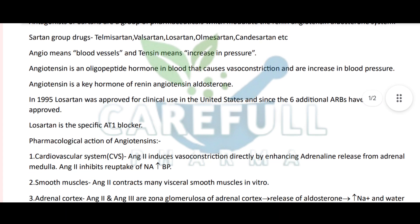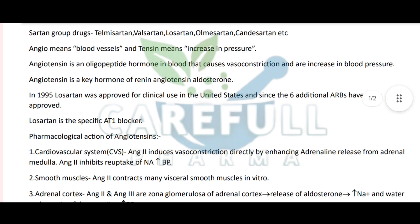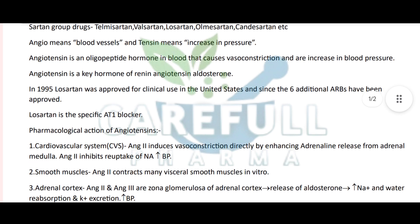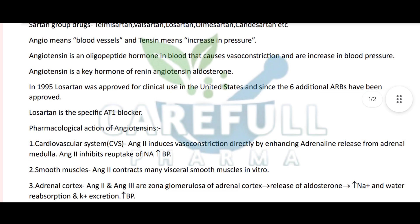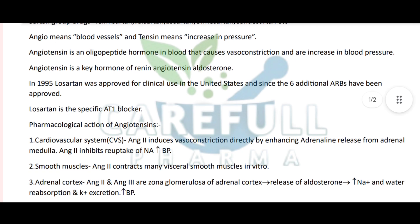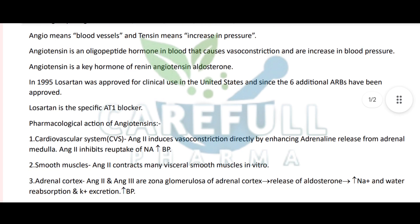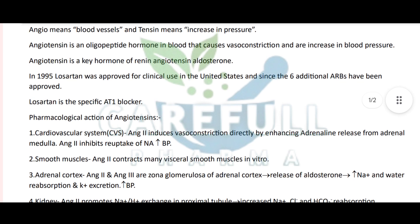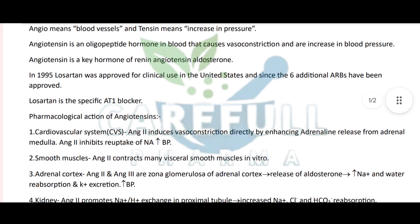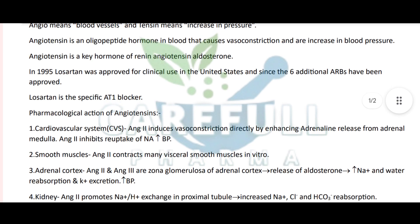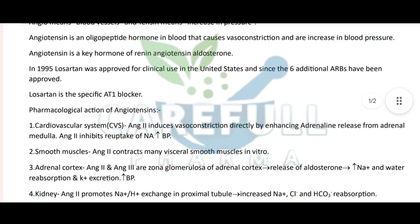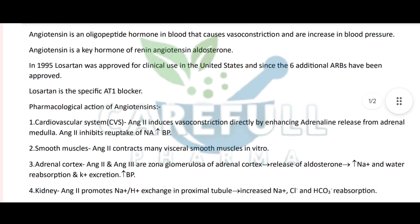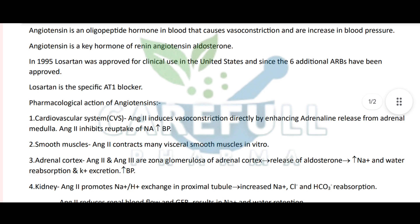Angio means blood vessels and tensin means increase in pressure. Angiotensin is an oligopeptide hormone in blood that causes vasoconstriction and increase in blood pressure, and is a key hormone of the renin-angiotensin-aldosterone system. In 1995, losartan was approved for clinical use in the United States, and since then six additional ARBs have been approved. Losartan is the specific AT1 blocker.